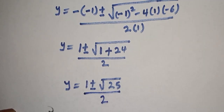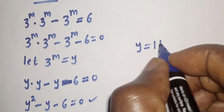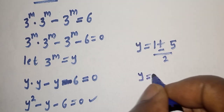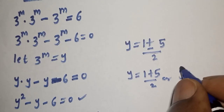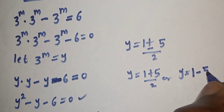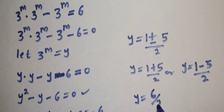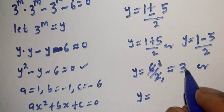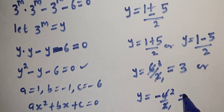Since the square root of 25 is 5, y equals 1 plus or minus 5 over 2. So y equals 1 plus 5 over 2, which is 6 over 2, giving y equal to 3. Or y equals 1 minus 5 over 2, which is minus 4 over 2, giving y equal to minus 2.